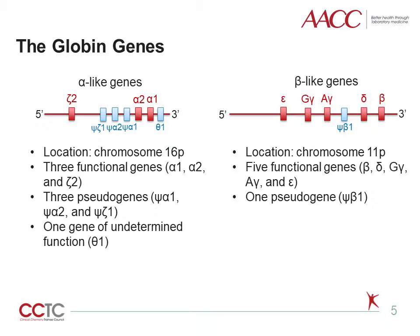The alpha-like gene cluster is located on the short arm of chromosome 16. It contains three functional genes — alpha-1, alpha-2, and zeta-2 — three pseudogenes, which are DNA sequences that closely resemble known genes but are non-functional, and one gene of undetermined function. It is noted that the alpha-1 and alpha-2 genes have closely related nucleotide sequences and an identical coding sequence. The beta-like gene cluster is located on the short arm of chromosome 11 and contains five functional genes — beta, delta, G-gamma, A-gamma, and epsilon — and one pseudogene.